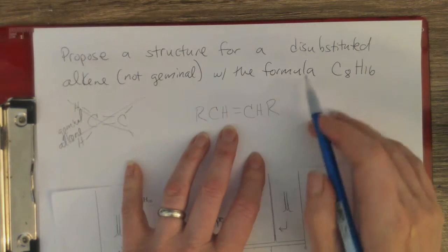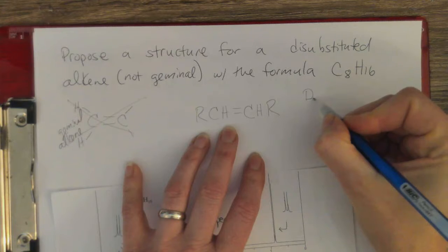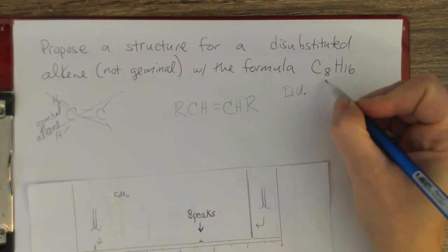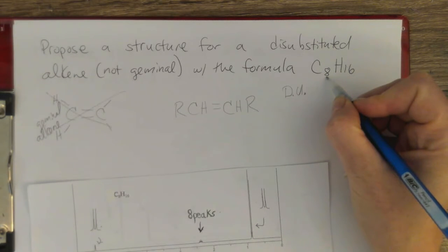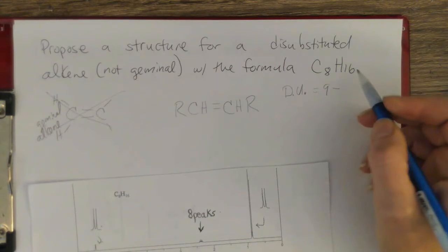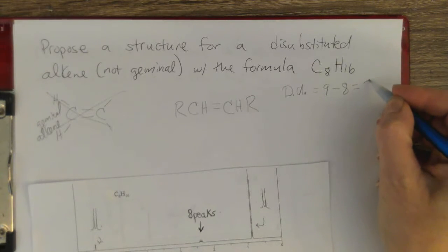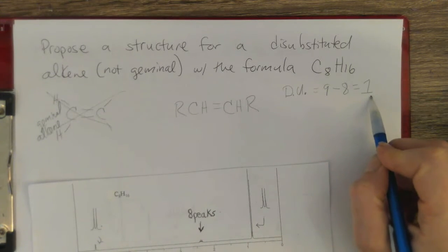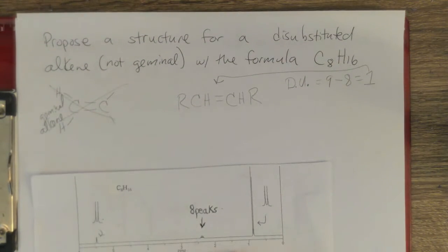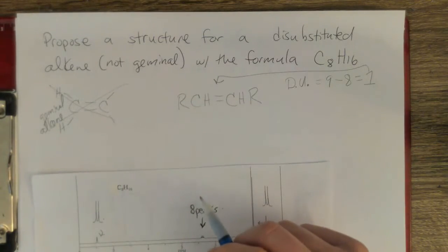Step one is to find the degrees of unsaturation. The formula is the number of carbons plus one — that's nine — minus half the number of hydrogens — that's eight. So we get one degree of unsaturation, and that one degree of unsaturation is because it's an alkene. There's no ring and no other multiple bond.